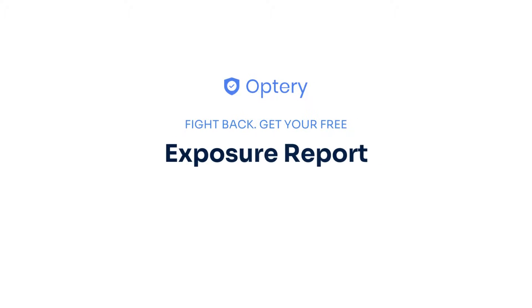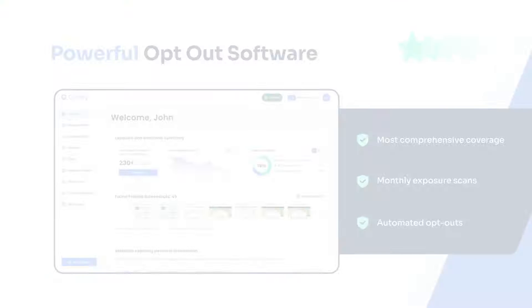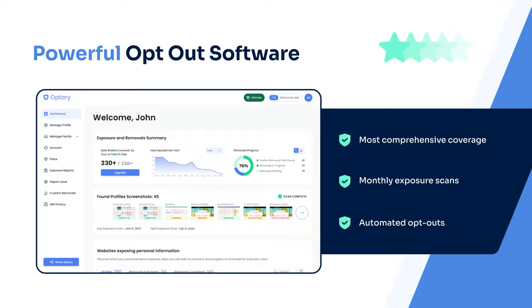That is why Optory offers the free exposure report. The exposure report shows screenshots from sites that have your data, with links to let you see that data right on the site. Use the exposure report and our how-to guides to opt yourself out for free, or sign up for an Optory paid plan and Optory will handle the monitoring and removals for you and your family members.